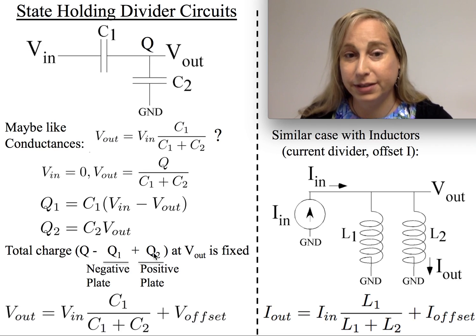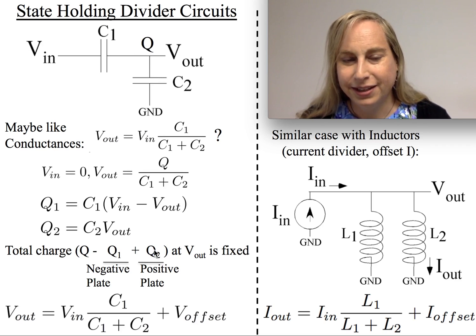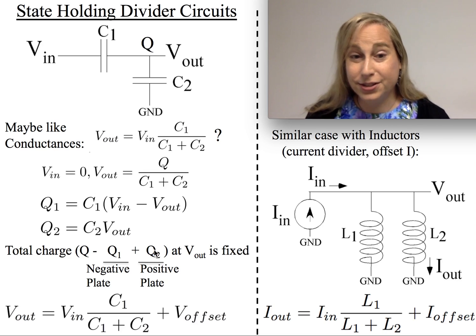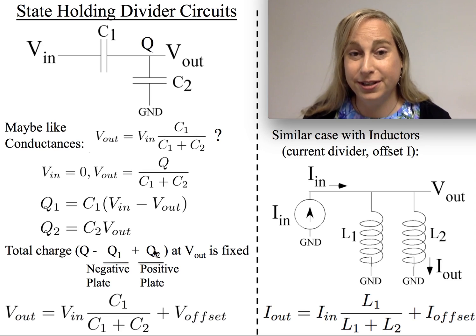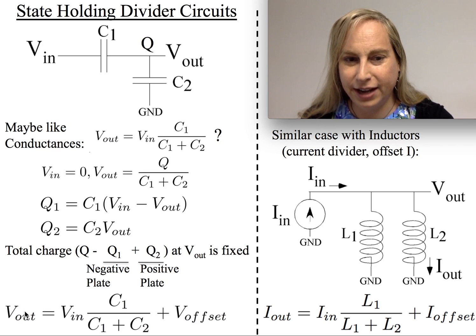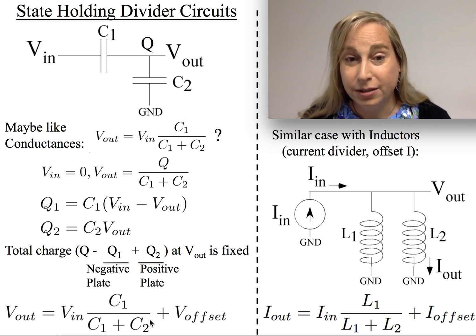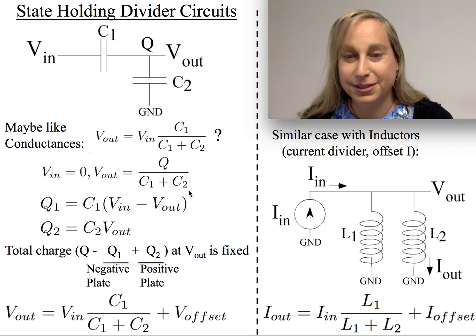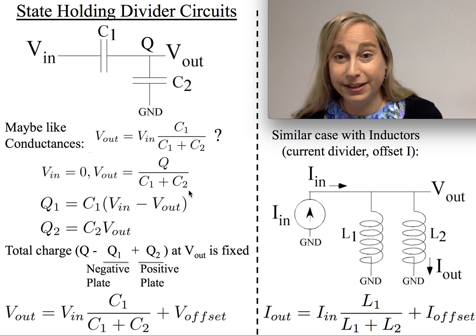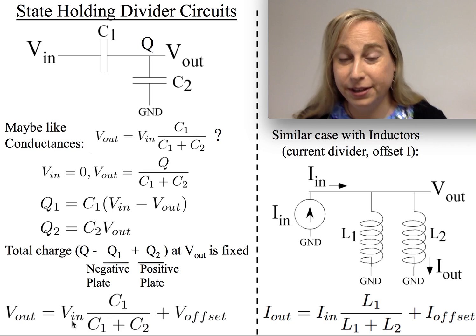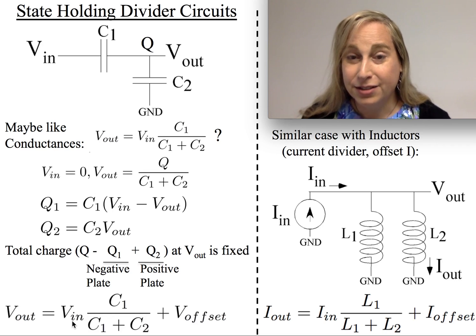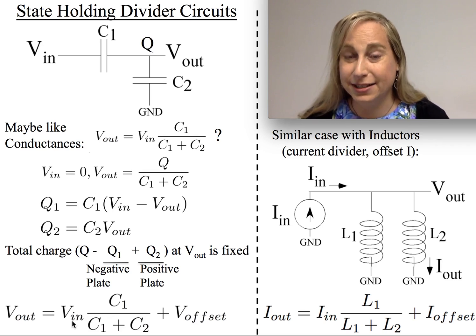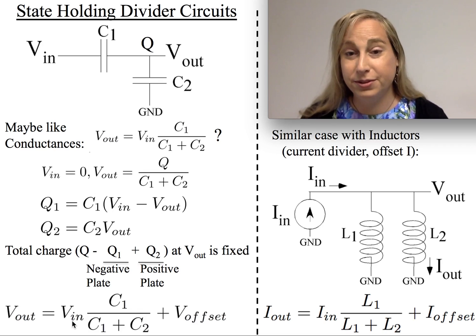When you put all of these three things together, you get a very interesting result: V_out actually equals V_in × C1/(C1+C2), plus an offset voltage. And that offset voltage is Q over C1 plus C2. You can verify this by setting V_in equal to zero. So all of the intuition makes sense, but now we have to think about what we do with the state-holding variable.